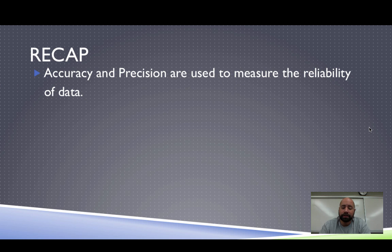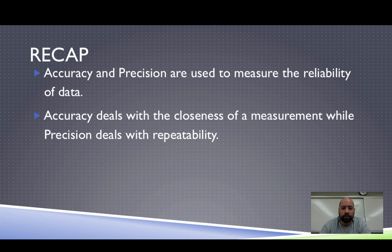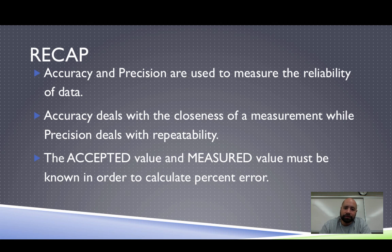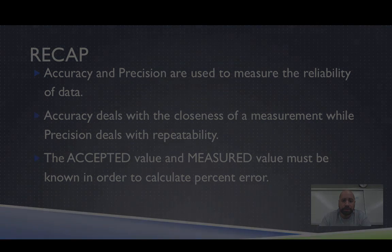Let's recap. Accuracy and precision help us get reliable data — we want both in our measurements. Accuracy is the closeness of our measurement to the accepted value, while precision is repeatability — can you do it over and over again? You need to know the accepted value and your measured value to calculate percent error; if you don't know one of those two, you can't calculate it. Thanks for watching and following along. Make sure your notes are filled out, and go back and pause if you need to copy down any definitions.